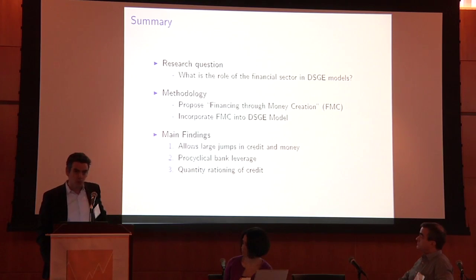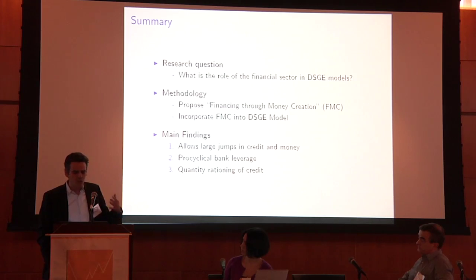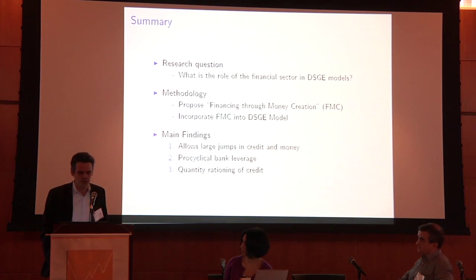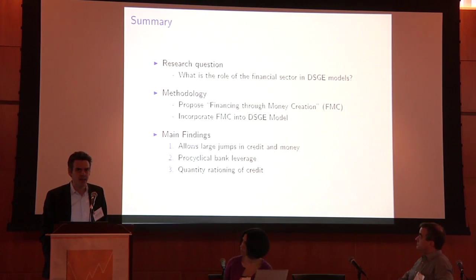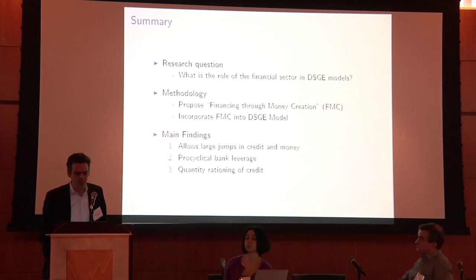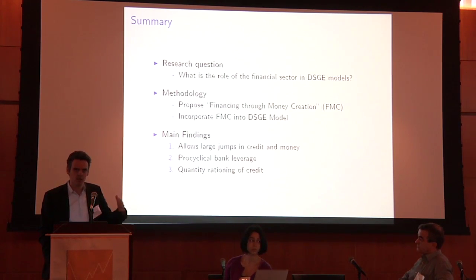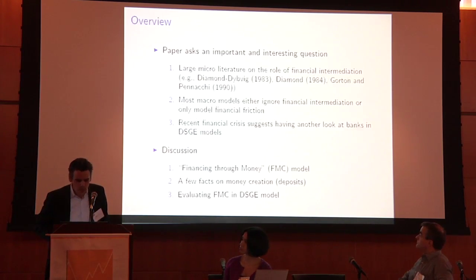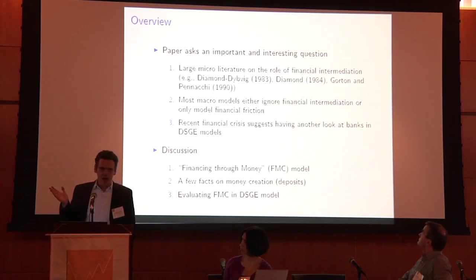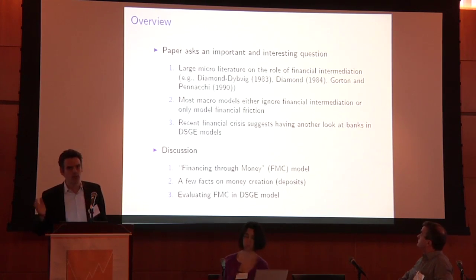There are three main findings. First, if you put in this concept of FMC money creation, you allow for large jumps in credit and money — that's important if those are things you want to match. Second, it creates pro-cyclical bank leverage, as opposed to standard models which they argue create counter-cyclical leverage — an important point we'll come back to. Third, there appears to be more quantity rationing of credit as opposed to price rationing. Overall, this paper asks an interesting, important, and very topical question.